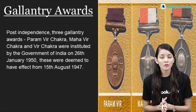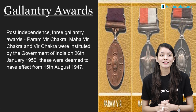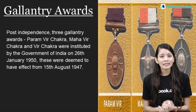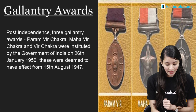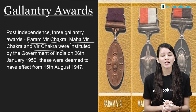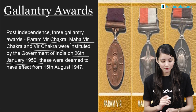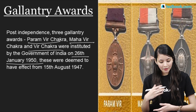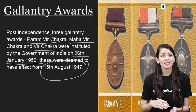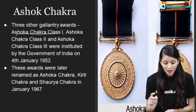After Independence, three Gallantry Awards — Param Vir Chakra, Mahavir Chakra, and Veer Chakra — were instituted by the Government of India on 26th January 1950, with effect from 15th August 1947. Three more Gallantry Awards — Ashok Chakra Class 1, Class 2, and Class 3 — were instituted by the Government of India on 4th January 1952.